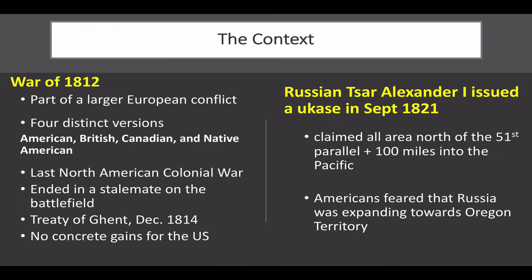To understand how the Monroe Doctrine became the symbol of American hegemony in the Western Hemisphere, we must look at some of the events that prompted such a declaration. First, the War of 1812. It was an unusual war with at least four distinct versions: the British, the American, the Canadian, and the Native American version. Although the War of 1812 was part of a larger European conflict, the United States became involved in a war against Britain.